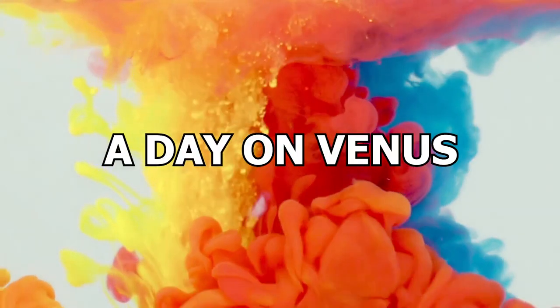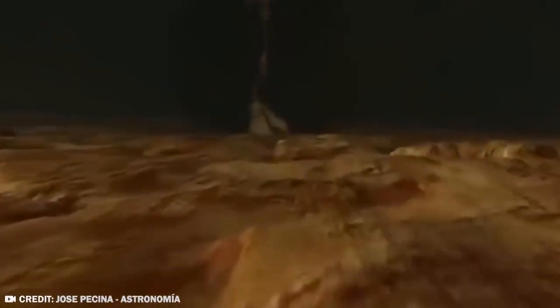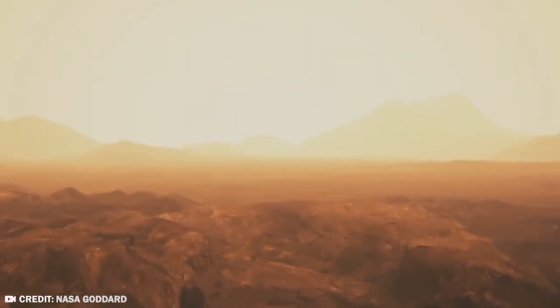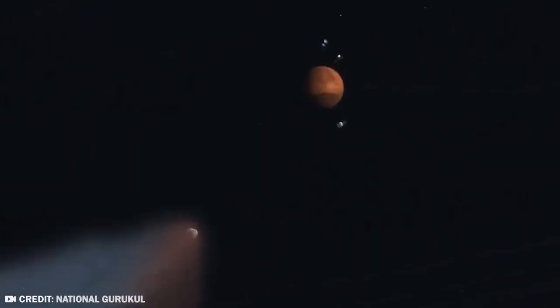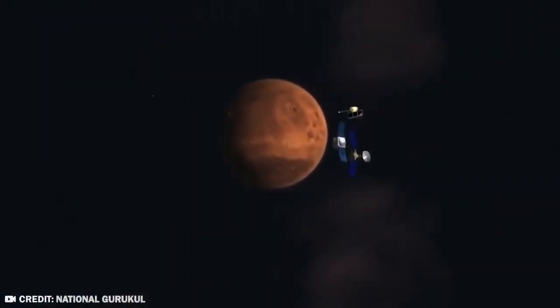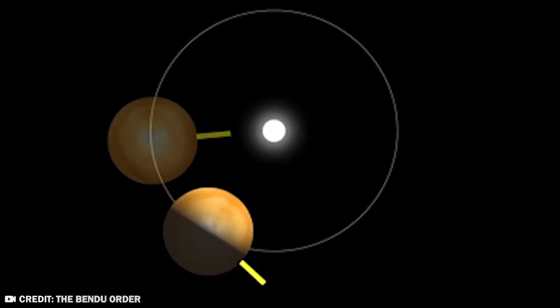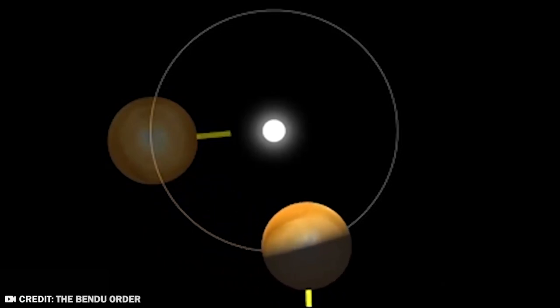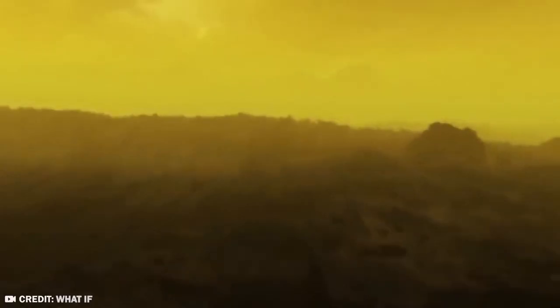Number 2: A Day on Venus. Sometimes it feels like the years just go by so slowly, doesn't it? It takes forever just to get through 365 days. Well, if you think that's long, just imagine what it must be like to live on Venus.